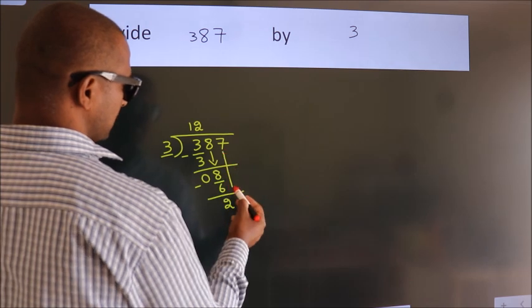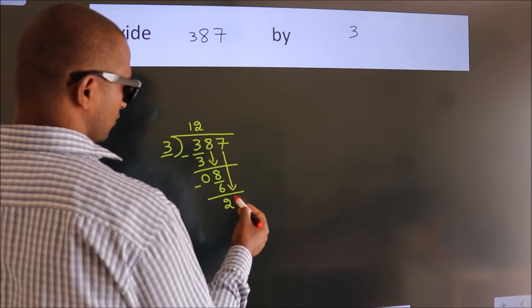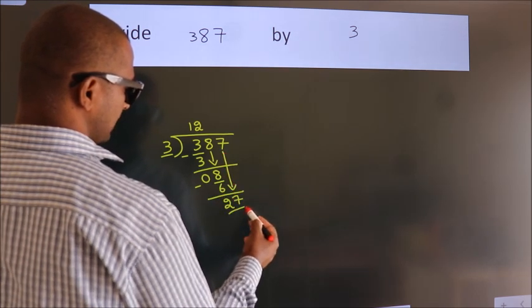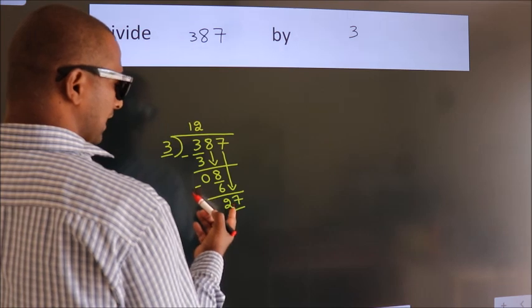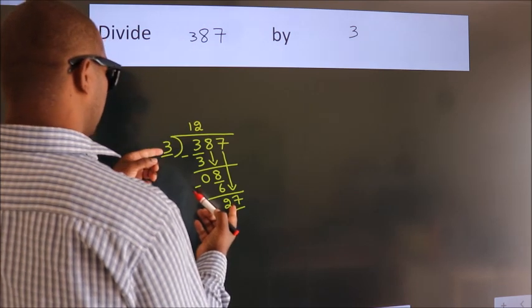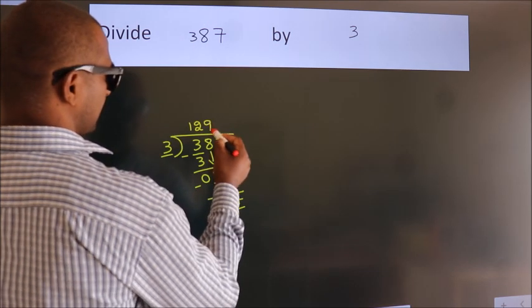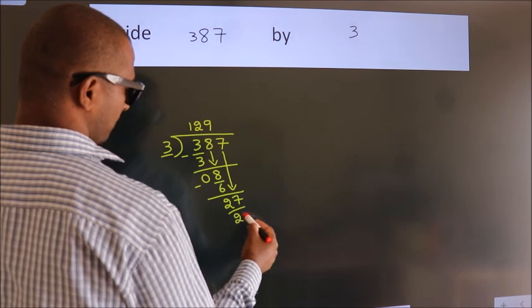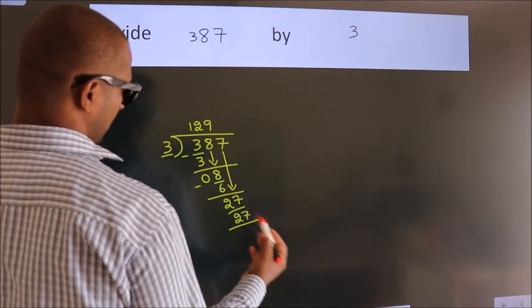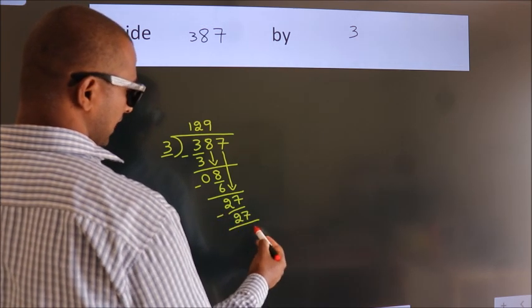After this, bring down the beside number. So, 7 down. So, 27. When do we get 27? In 3 table, 3 nines, 27. Now, we subtract. We get 0.